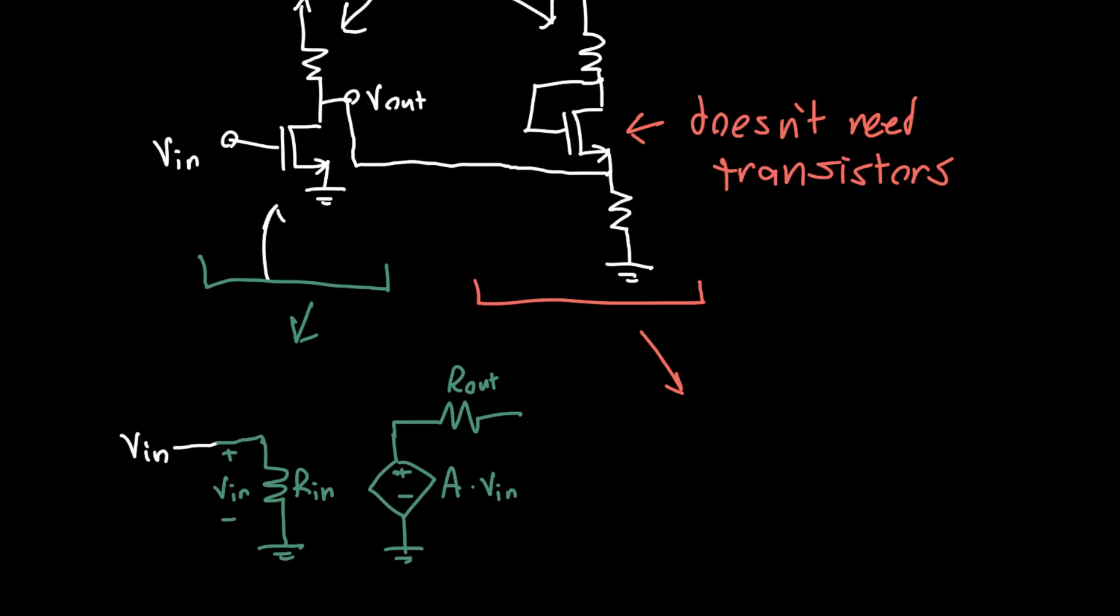I can spell transistors. It doesn't need any transistors, it doesn't need any op-amps to be treated like an amplifier. And we say, well, this circuit also has an input resistance, let's call this R_in2.